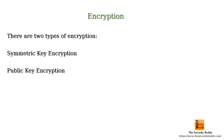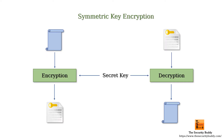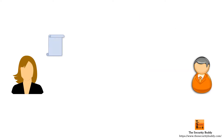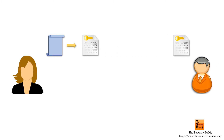Symmetric key encryption is an encryption process in which the same key is used for both encryption and decryption. In other words, if a user encrypts plain text with a secret key and sends the cipher text to another user, the recipient needs to use the same secret key to decrypt the cipher text. But there is a problem with this approach.